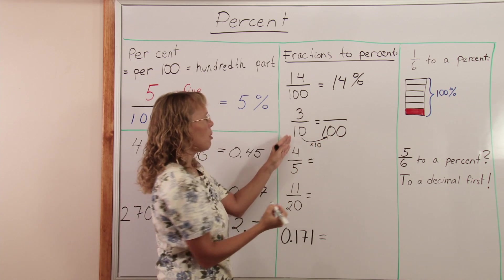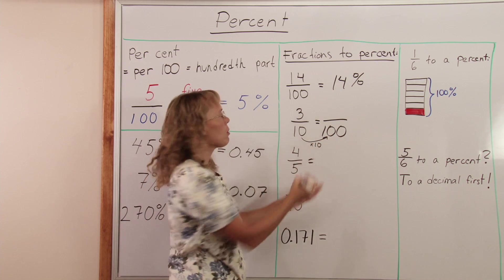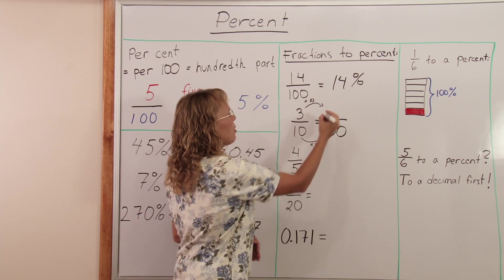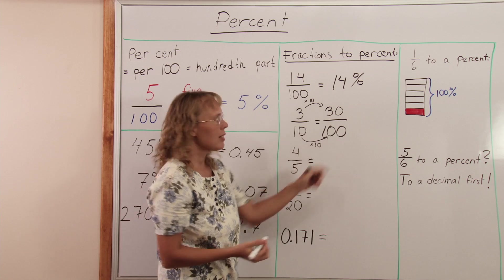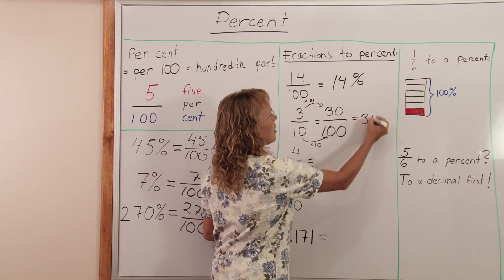Since my denominator is multiplied tenfold, that's what happens to the numerator too. Tenfold. I get 30 here. And now I have my per and my cent. So it is simply 30 percent.